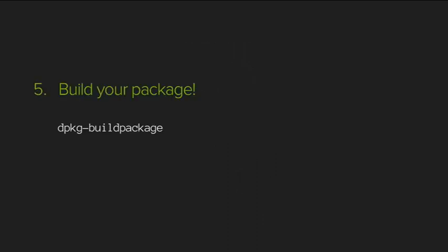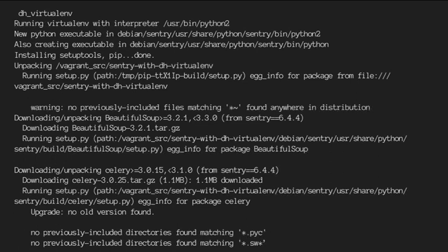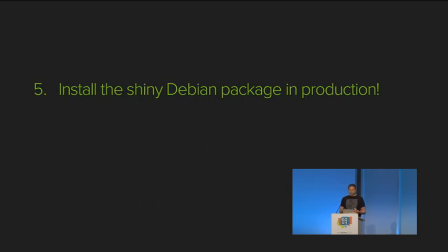Fire off the package build and it rolls through with a matrix-like output: it creates a virtual environment, puts pip in there, and starts pulling dependencies down into your package. Once done, take the Debian package, copy it to your production host, and install it. Any runtime dependencies defined in the control file get installed at the same time — and you haven't executed any random scripts on your production system, because all of that happened in your build system.